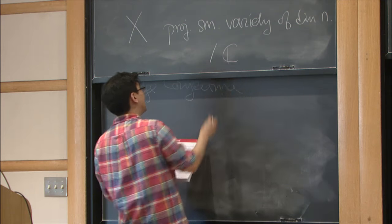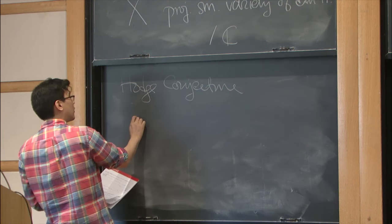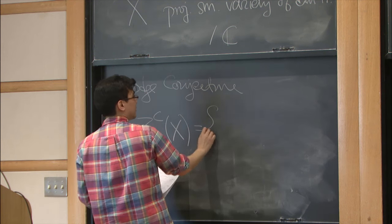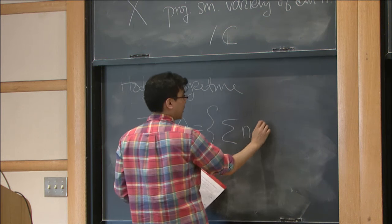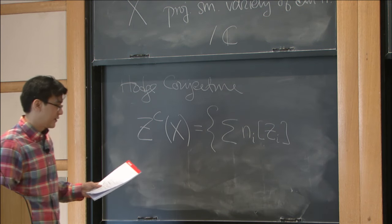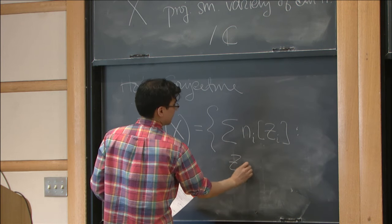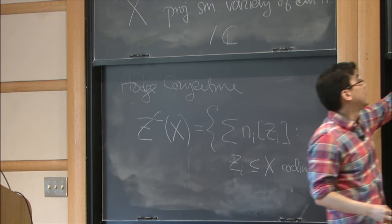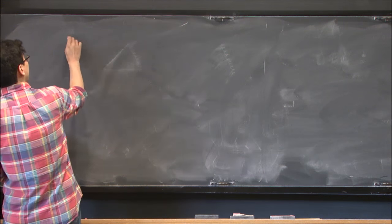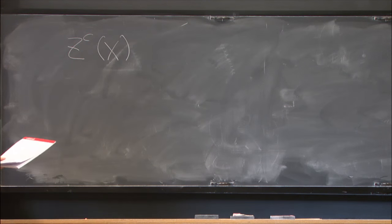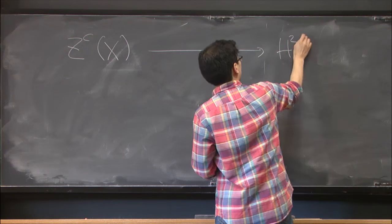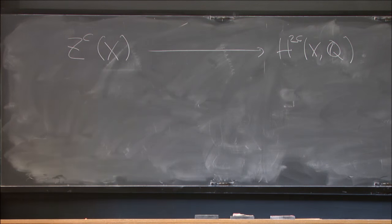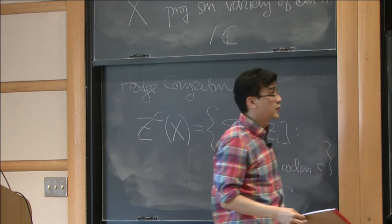So over the complex numbers, then we can consider the free abelian group of co-dimension C cycles on X. So these are formal integral linear combinations of the classes of co-dimension C subvarieties. Then we have a map, a cycle class map, from Z^C of X to H^{2C} of X with Q coefficients, by looking at this as a homology class of co-dimension C, real co-dimension C.